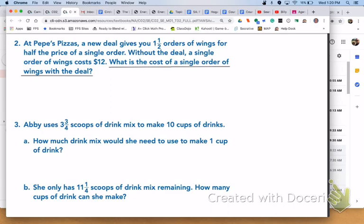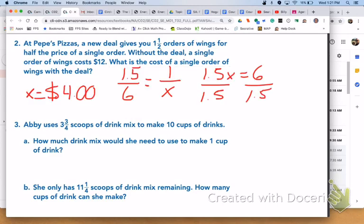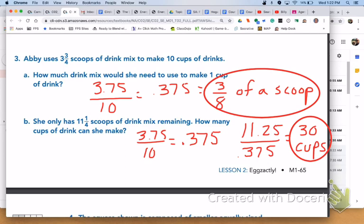Please answer number 2 and number 3, letter A and B with your group. For number 2, the cost of a single order of wings with the deal will be $4. For number 3, letter A, Abby would need 3 eighths of a scoop to make one cup of drink. And for letter B, she would need 30 cups.